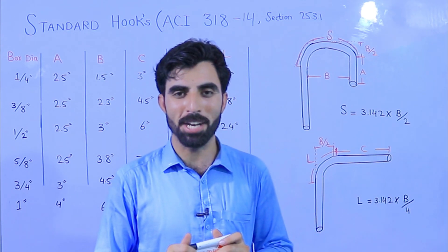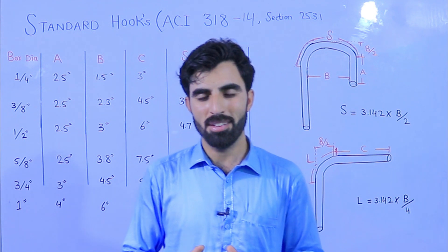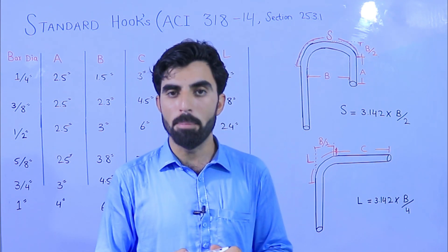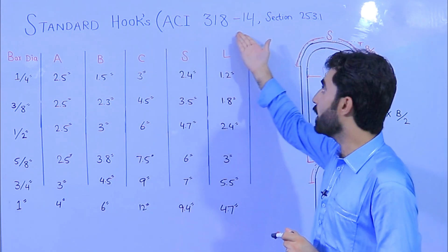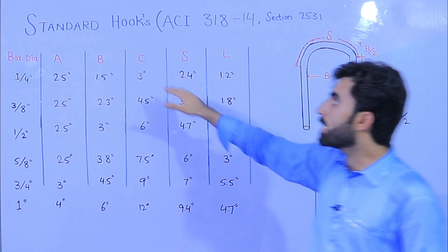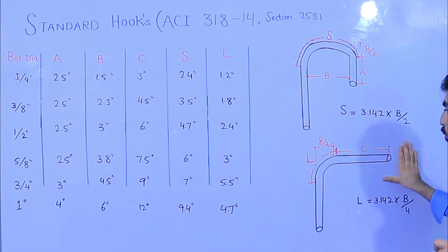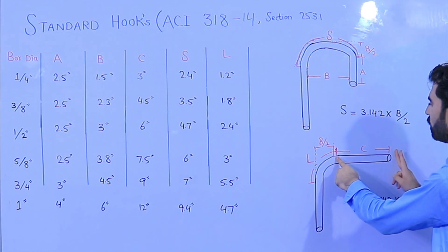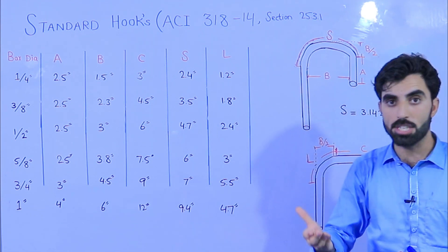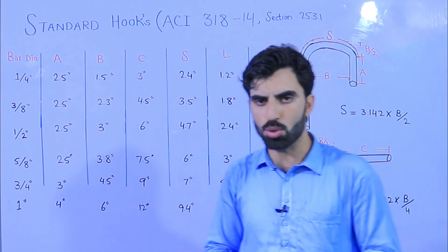Assalamualaikum beautiful people. After a long time, because I was busy in some of my projects, I'm sorry for coming late. Let's start. Today in this important and short video lecture, I will discuss about steel structure design from the reference of ACI American Concrete Institute 318-14, in the section 25.3.1. They refer some data about standard hooks. As you know, in steel structure we have two types of hooks: 180-degree hooks and 90-degree hooks. The 180-degree shape is used specially in slabs; the 90-degree one is used in raft foundation and different structures.